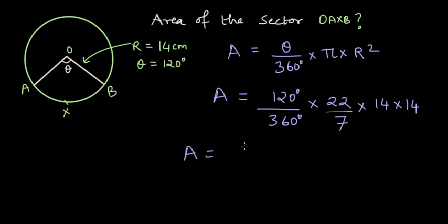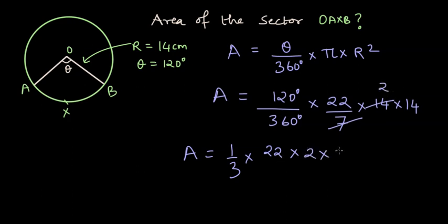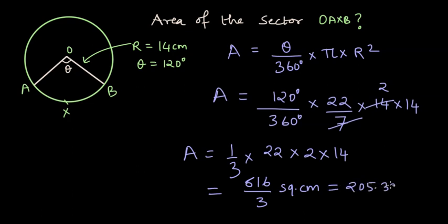Solving this, we get Area = (1/3) = 120/360, times 22/7, times 14 × 14. Dividing 14 by 7 gives 2, so we have 22 × 2 × 14, which gives us the area as 616/3 square centimeters, or approximately 205.33 square centimeters.